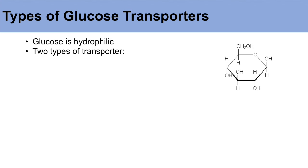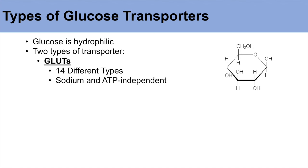There are actually two types of transporters. The first type are the GLUTs, or glucose transporters, and there are actually 14 different types of GLUTs. They are all sodium and ATP independent, and they are ubiquitous, so they're found all throughout the body in all cell types.